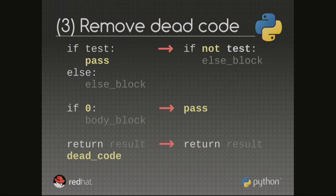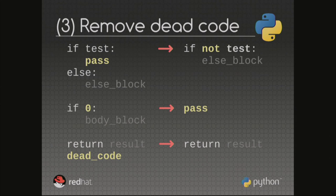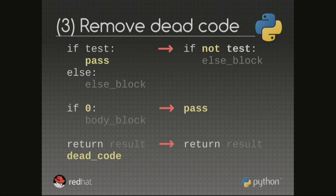Another simple change is to remove dead code. If you have an if block and an else block and the if block is empty, you can invert the condition and remove the if block — useful to avoid jumps at the bytecode level. If a test is known to always be false, you can remove the whole test. And if you have a final instruction like return or raise at the end of control flow, you can remove everything after it.